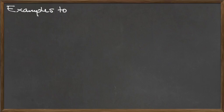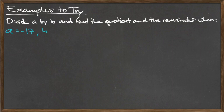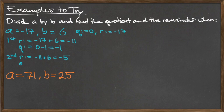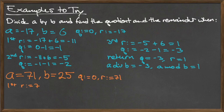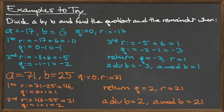To get some practice with the division algorithm, try computing the quotient and remainder for the inputs a equals negative 17 and b equals 6, and again with a equals 71 and b equals 25. For a equals negative 17 and b equals 6, the quotient a div b is negative 3 and the remainder a mod b is 1. For a equals 71 and b equals 25, the quotient a div b is 2 and the remainder a mod b is 21.